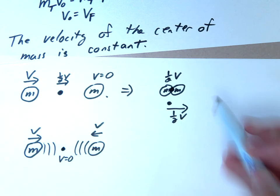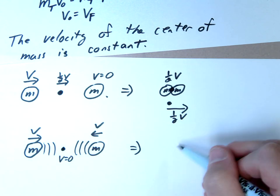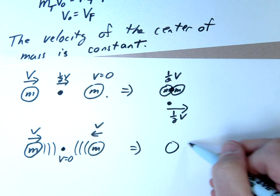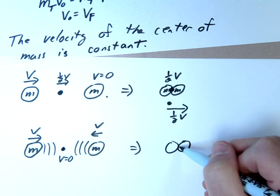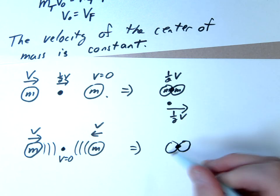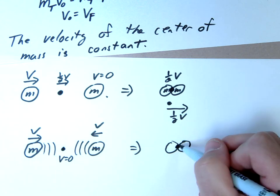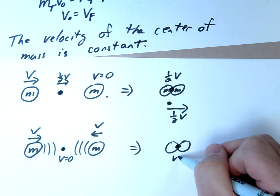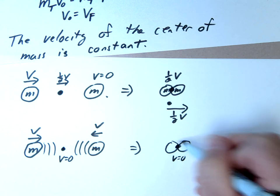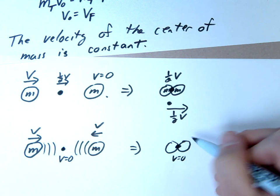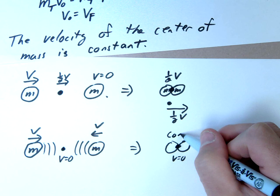Now what happens when they collide? Well let's imagine it's completely inelastic so that they stick. Well if they stick, then basically since that's MV and that's negative MV, then this would be V equal to zero. They'd be stopped. They'd essentially cancel each other out if that was completely inelastic.